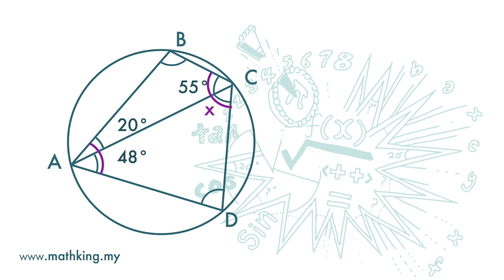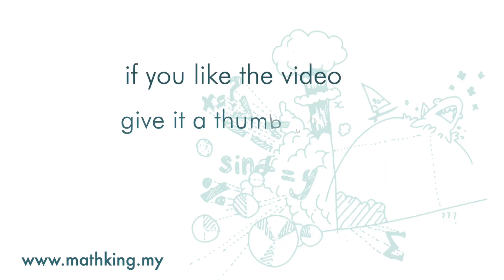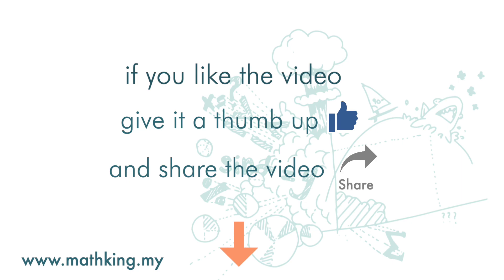If we add them up we get 180 degrees. So 20 plus 48 plus 55 plus x equals 180. So x is 180 minus 20 minus 48 minus 55, and we get 57 degrees.